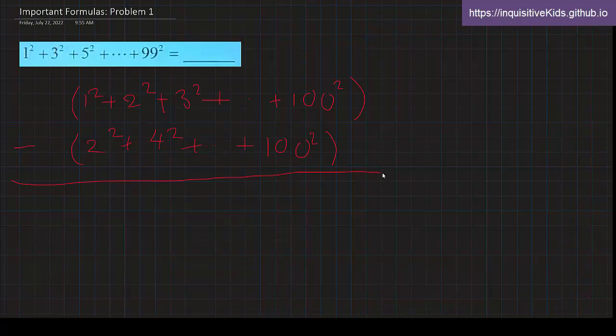Alright, so now that we have this equation set, we can first find the sum of the very top number. 1 squared plus 2 squared plus 3 squared all the way up to 100 squared. Pause the video and see if you can solve it according to our formula. Alright, come back. So that would be, remember this formula, 1 sixth times n times n plus 1 times 2n plus 1. So this is the formula we're going to use for the first one.